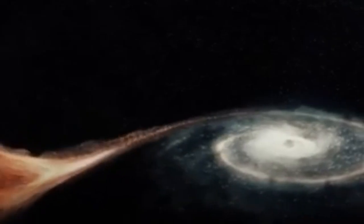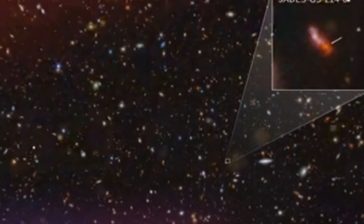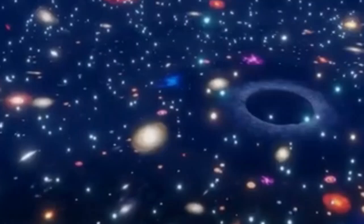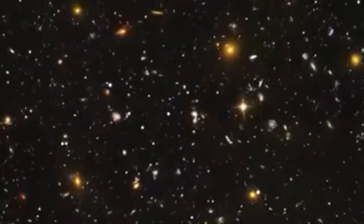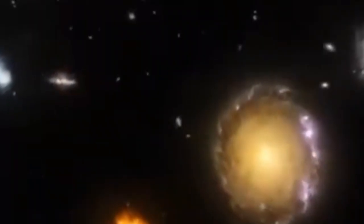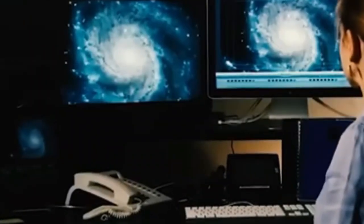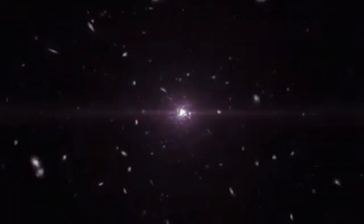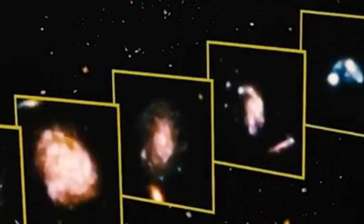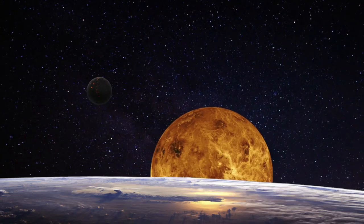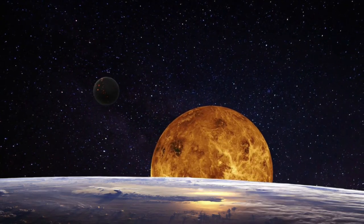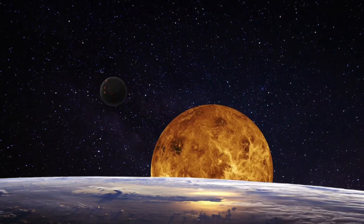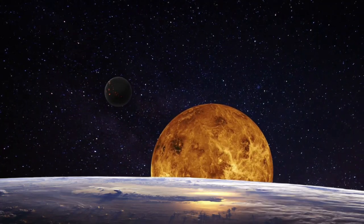New research from the University of Texas at Austin reveals that some of these early galaxies aren't as massive as they first appeared. It turns out that black holes within these galaxies are making them look brighter and larger than they actually are. These black holes are rapidly consuming surrounding gas, which heats up and emits light, giving the galaxies an artificially bright appearance. This added brightness can create the illusion that these galaxies are packed with more stars and are more massive than they really are. When scientists adjust their calculations to account for these misleading bright spots, the remaining galaxies align with the predictions of the standard model.